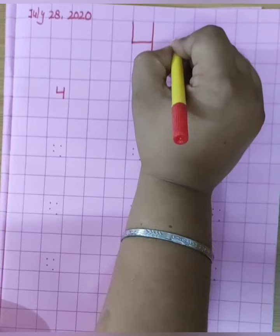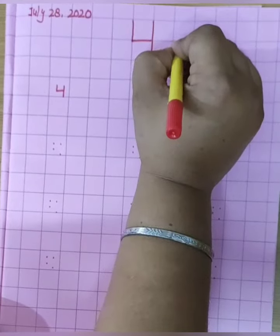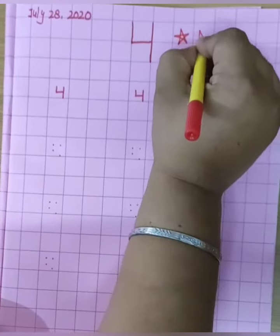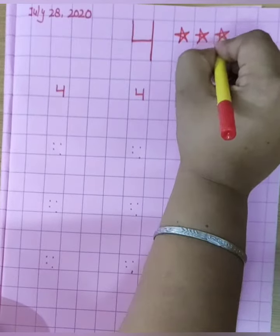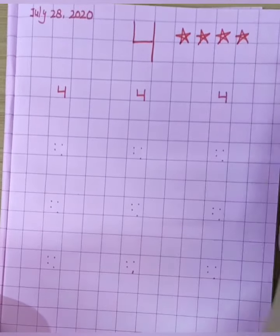Now, I will draw 4 stars. Let's count with me. 1, 2, 3, 4.